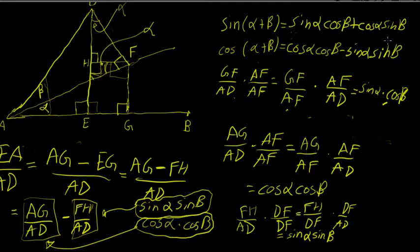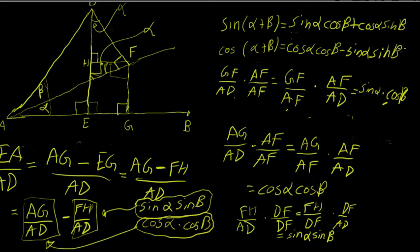Knowing these sum identities, as shown in another video, we can easily compute the difference identities for sine and cosine simply by replacing beta with negative beta. And knowing those, we can compute the sum and difference identities for tangent and cotangent — for example, dividing sine of alpha plus beta by cosine of alpha plus beta gives the tangent sum identity. I've shown that process in another video. See you in the next video!